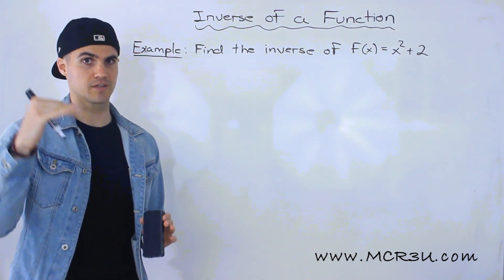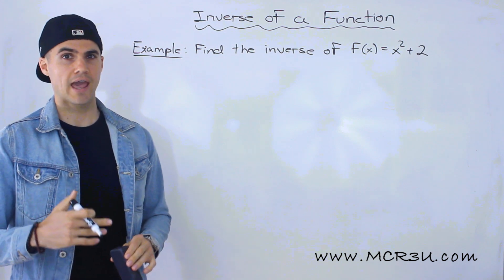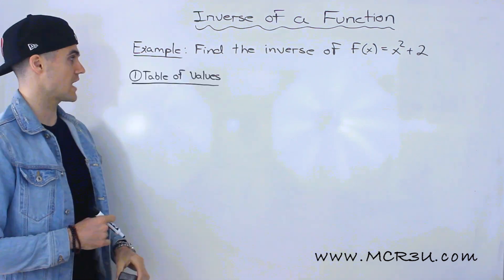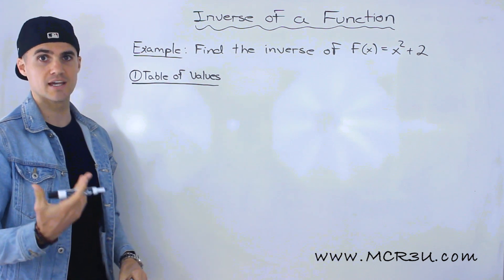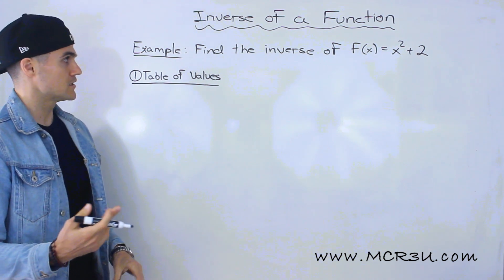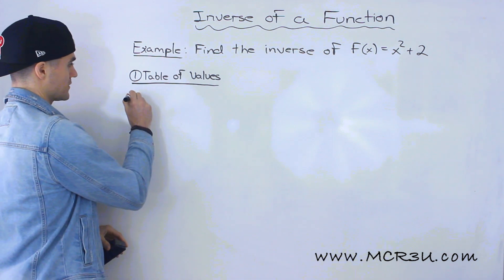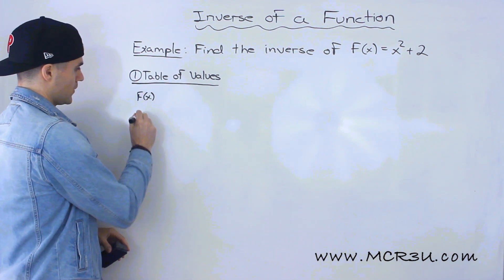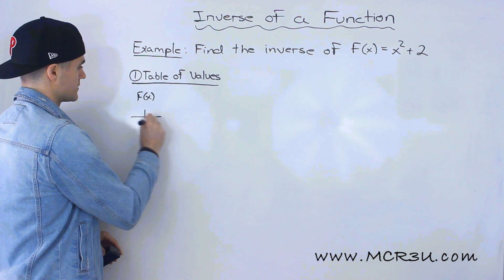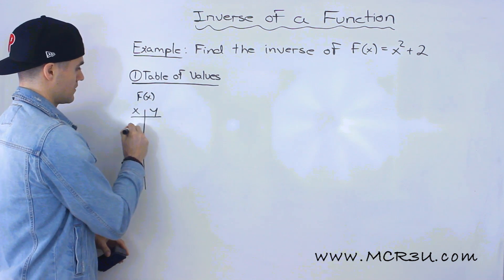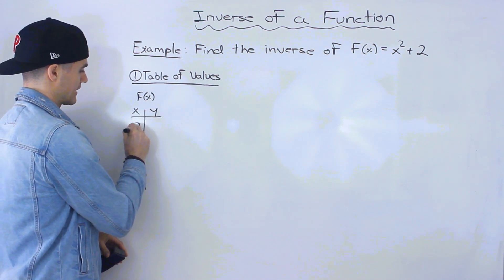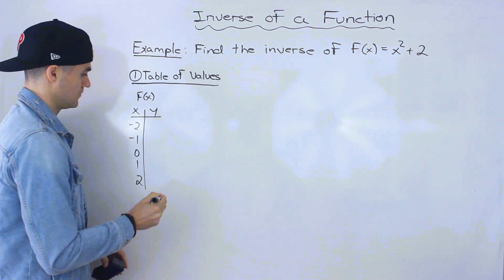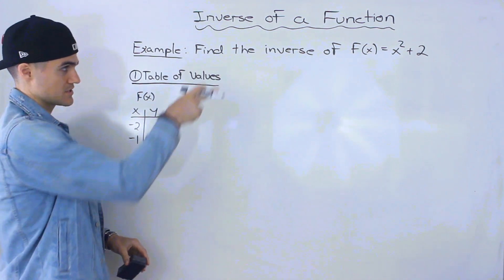This is just a regular parabola that's been shifted up by two units, and I'm going to show you how to find the inverse in multiple different ways. The first way that you could do it is with a table of values. So what we can do is take this function and make a table of values for it, with x values: negative two, negative one, zero, one, and two.